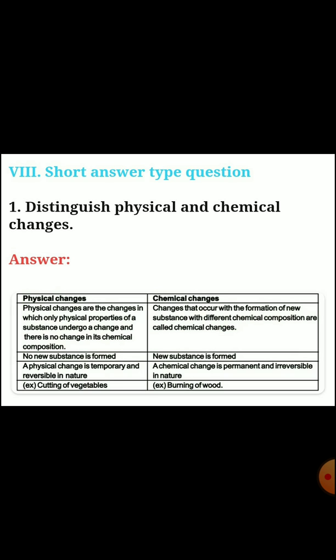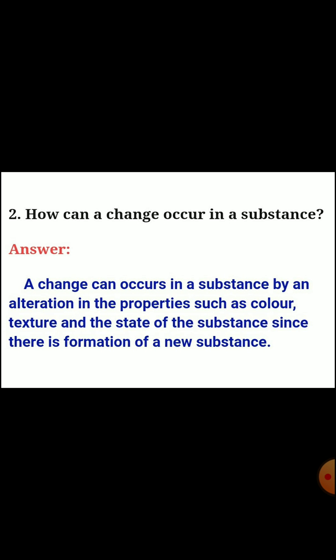Example: physical change - cutting of vegetables; chemical change - burning of wood. Question two: how can a change occur in a substance? Answer: a change occurs in a substance by alteration in properties such as color, texture, and the state of the substance, or by the formation of a new substance.